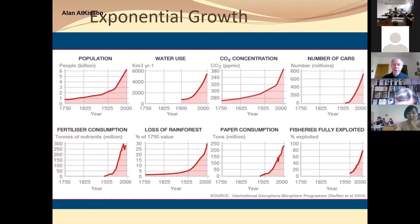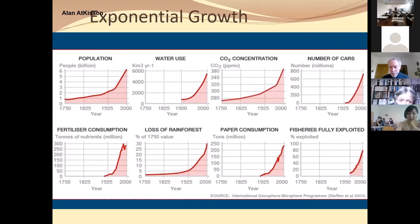For example, if there is a two percent yearly increase, it means it's doubled after 35 years — you take 70 and divide by the yearly percent. It means it's four times after 70 years, and eight times after 100 years, and so on.